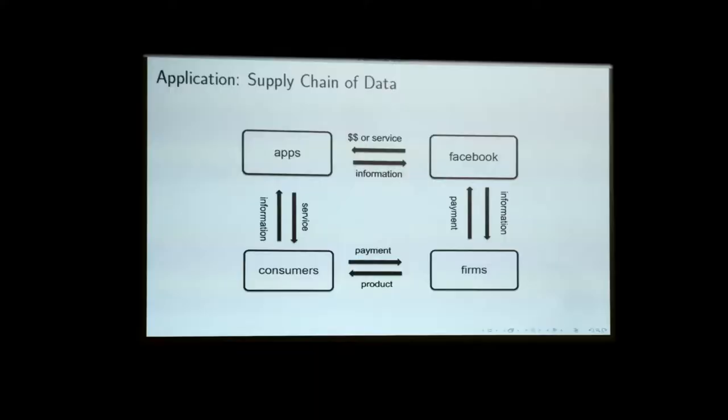This can take on many forms. If you think about search — say Google — the consumers try to get information on the search engine, and that result is basically forwarded through the position auction to the advertisers. It can take a more complicated structure: consumers might interact on apps, generate information there, that information is forwarded through agreements between the app and Facebook, and Facebook then monetizes it by selling advertising on these markets.